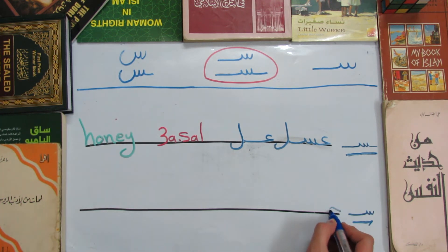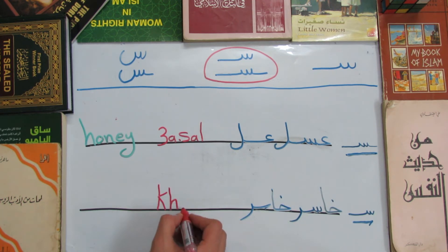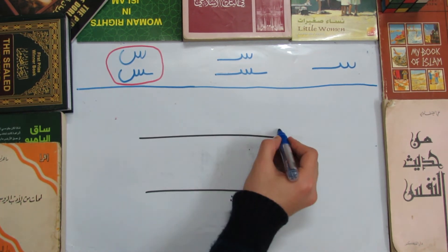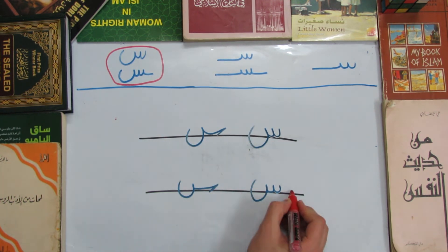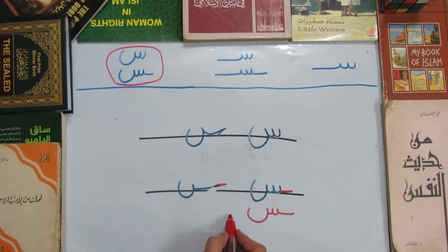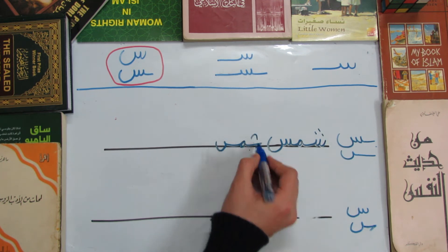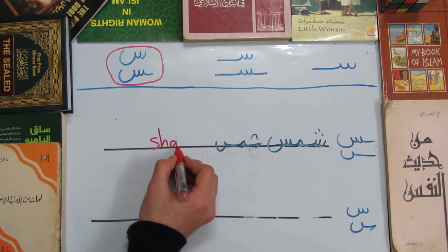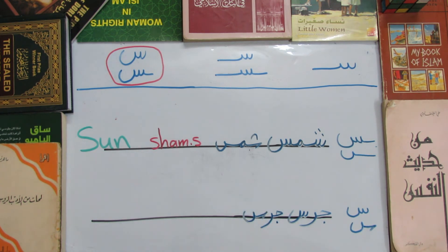An example of the other middle form is the word Khaasir, meaning 'loser.' Seen at the end of the word also has two shapes, depending on whether it is connected with the letter before it or not. An example is the word Shems, meaning 'sun,' and an example of the other end form is Jaras, meaning 'bell.'